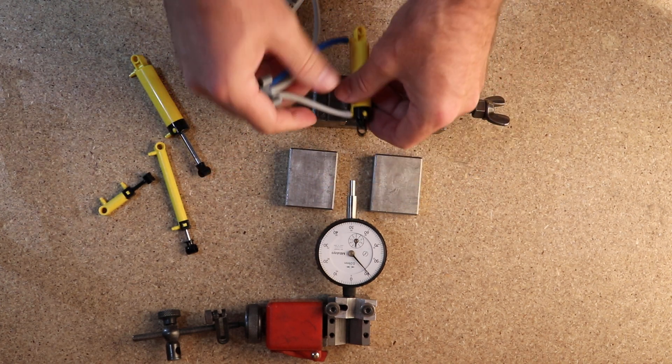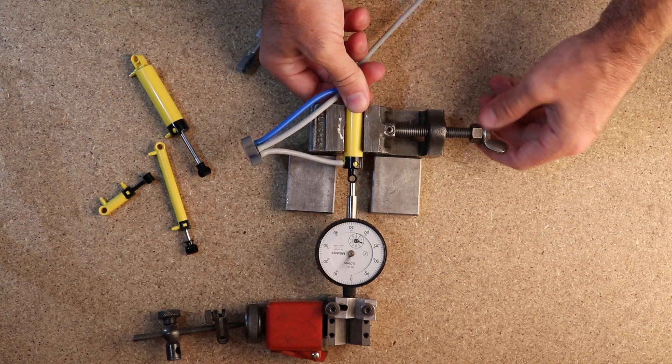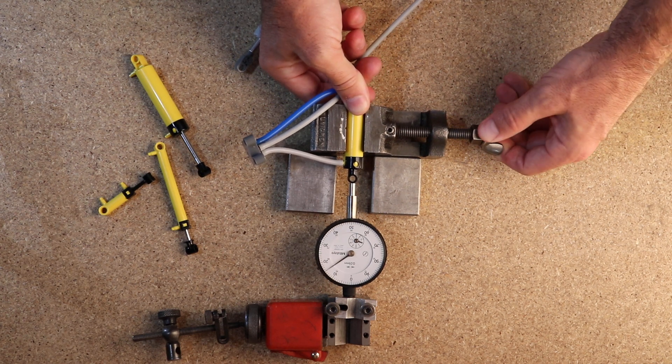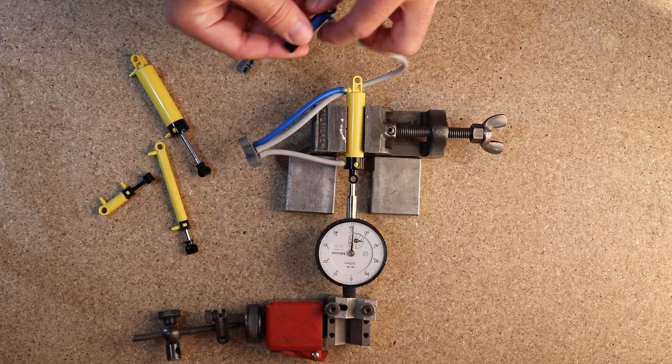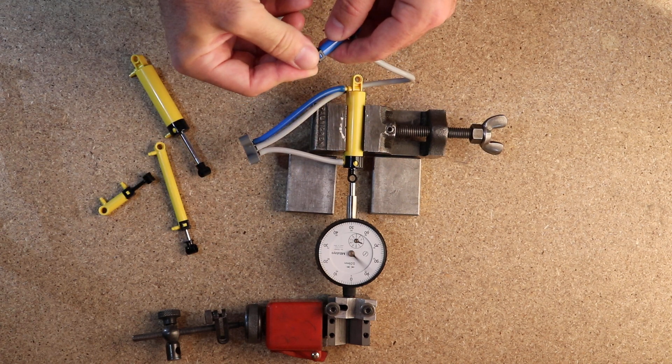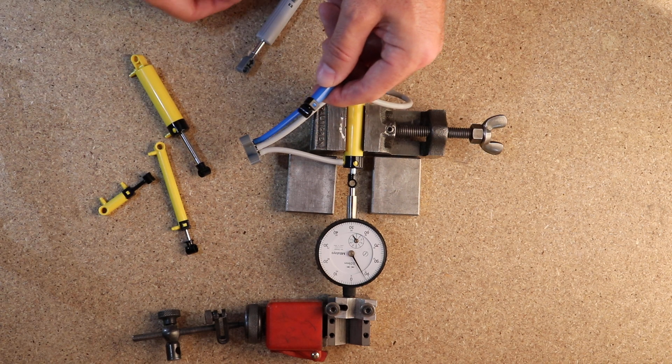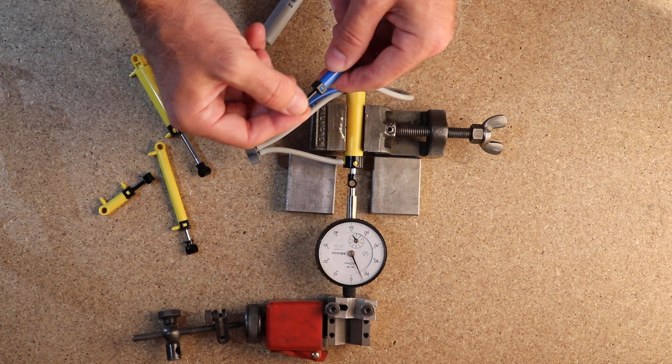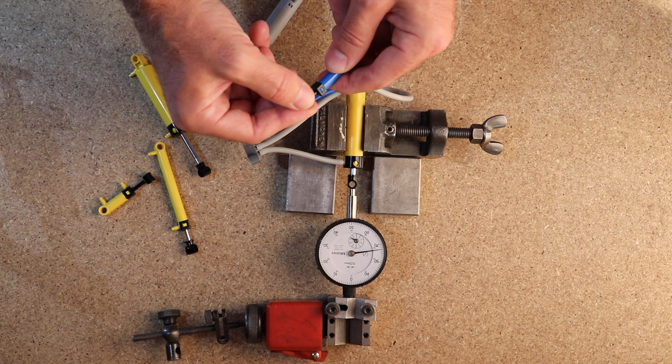Now let's see how precisely we can actually control this using this dial test indicator. We'll turn the valve to extend it and let's see what happens. You can see there's a huge delay, and that's because air is compressible. So we cannot finely control this thing at all.